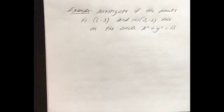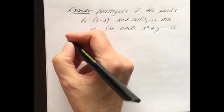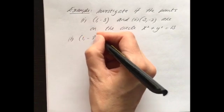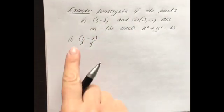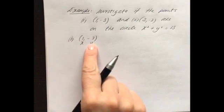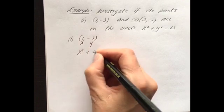Let's look at an example: investigate if the points (1, -3) and (3, -2) are on the circle x² + y² = 13. Pause the video if you feel confident, otherwise watch and we'll go through this together. First, we'll test the point (1, -3) — that's our x coordinate and our y coordinate — so we're going to substitute that in for x and y in our equation of the circle.